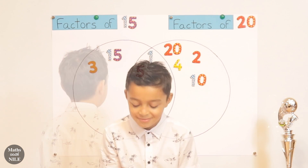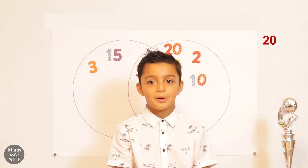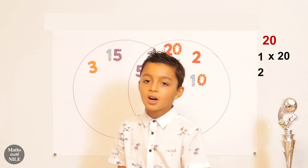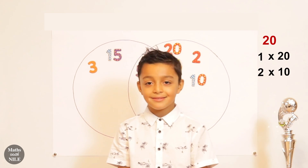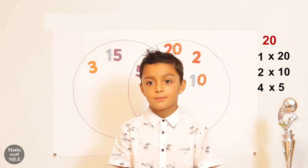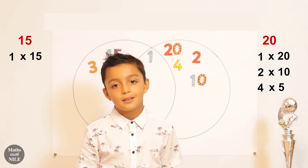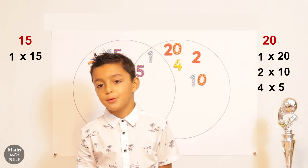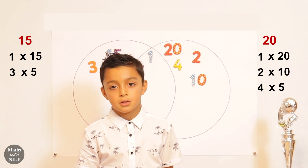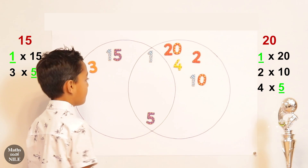Let's think of the factor pairs. For 20: the smallest factor is 1, and 1 times 20 is 20. Then 2 times 10. So 2 and 10 are factors. Then 4 times 5 — so 4 and 5 are factors. Now for 15: the smallest is 1 times 15. Then 2 is not one — so we go 3 times 5. So you've covered all the factors. The only common factors that 15 and 20 have are 1 and 5. Brilliant, very good.